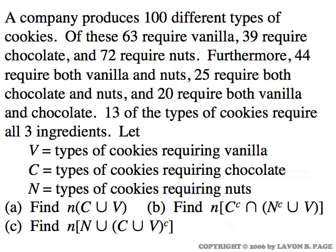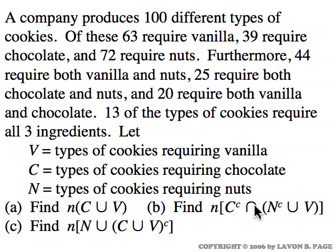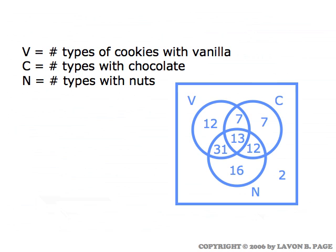A company is making cookies — a hundred types of cookies. Some of the types require vanilla, some require chocolate, some require nuts, some require vanilla and nuts, some require chocolate and nuts, some require vanilla and chocolate. We're going to let V be the set of all types of cookies that require vanilla, C all the types that require chocolate, and N all the types that require nuts. We have three counting questions we want to answer.